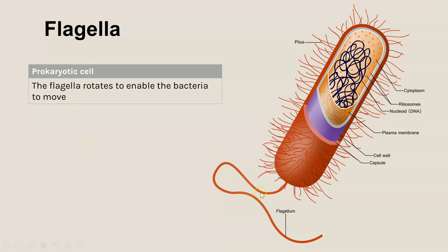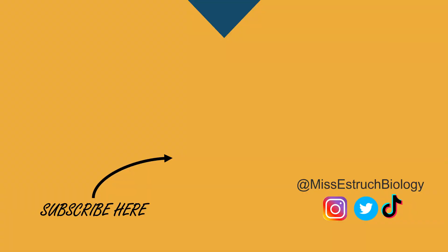The final structure, also not found in all prokaryotic cells, is the flagellum — some bacteria may have multiple, so the plural is flagella. The flagella rotate at the base like a spinning tail, acting as a motor to propel the bacteria so it can essentially swim. And that is it for prokaryotic cells at A-level biology — I hope you found it helpful, please give this video a thumbs up.